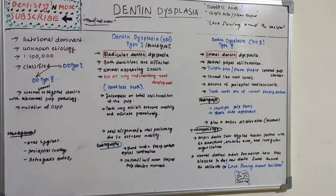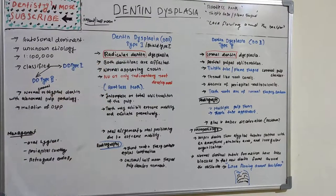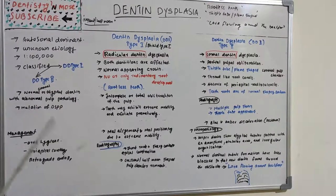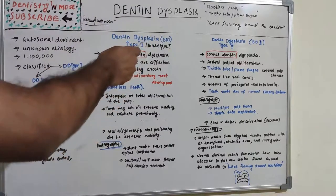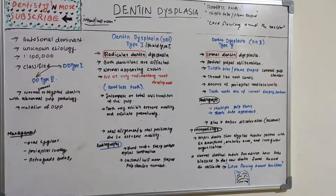Welcome back to Dentistry and More. Today's topic is a developmental anomaly known as dentine dysplasia. In previous sessions, we covered amelogenesis imperfecta and dentinogenesis imperfecta, where enamel and dentine formation is improper. Similarly, dentine dysplasia involves abnormal development of odontoblasts or dentine formation. Dysplasia means abnormal development of cells within tissues or organs.